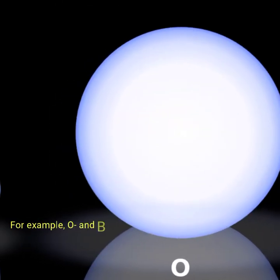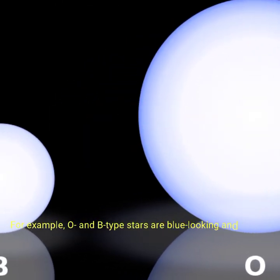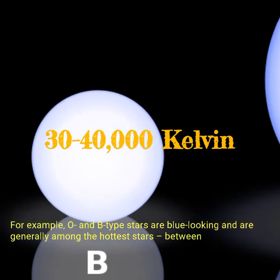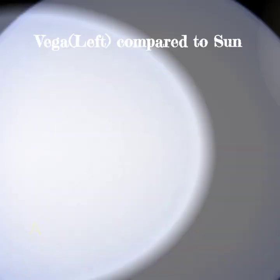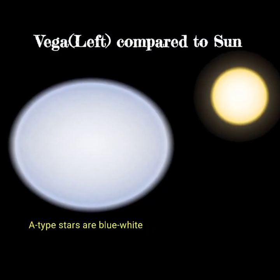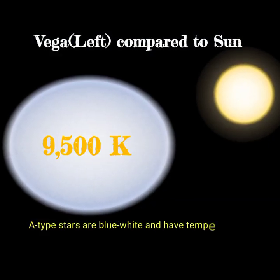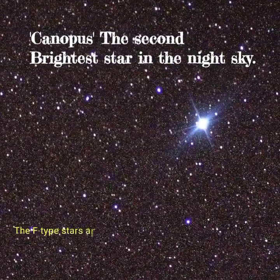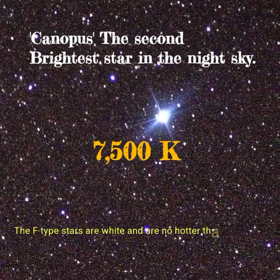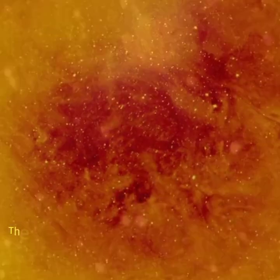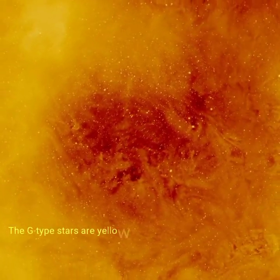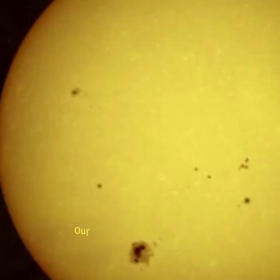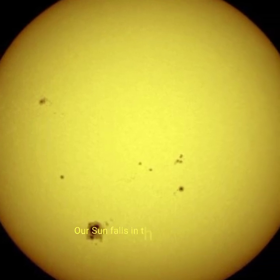For example, O and B type stars are blue-looking and are generally among the hottest stars, between 30,000 to 40,000 Kelvin. A type stars are blue-white and have temperatures around 9,500 K. The F type stars are white and are no hotter than 7,500 K. The G type stars are yellow-white and around 5,900 to 6,000 K. Our sun falls in this category.